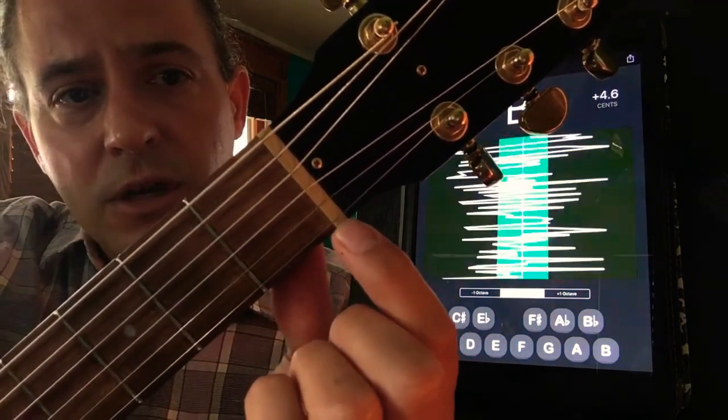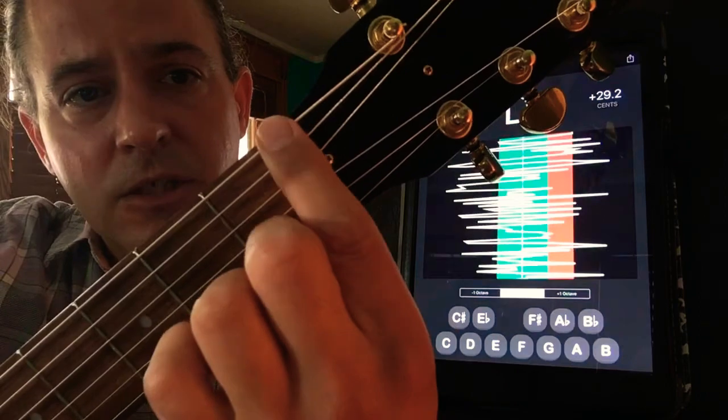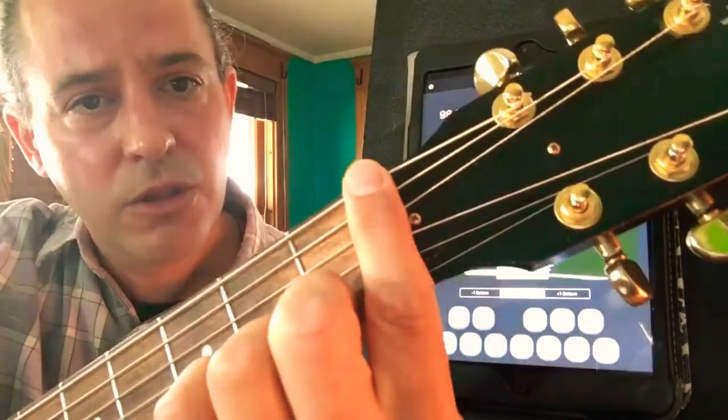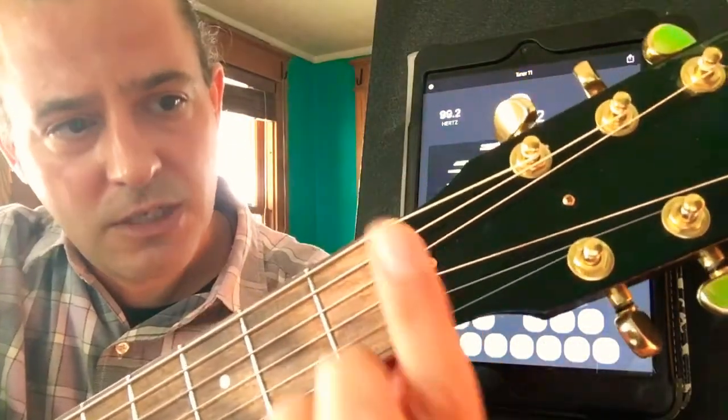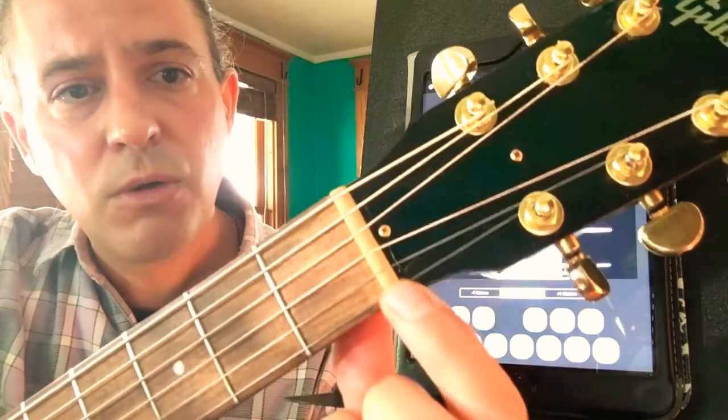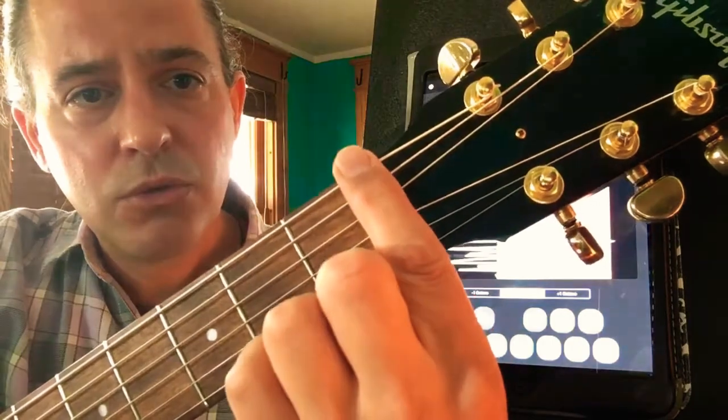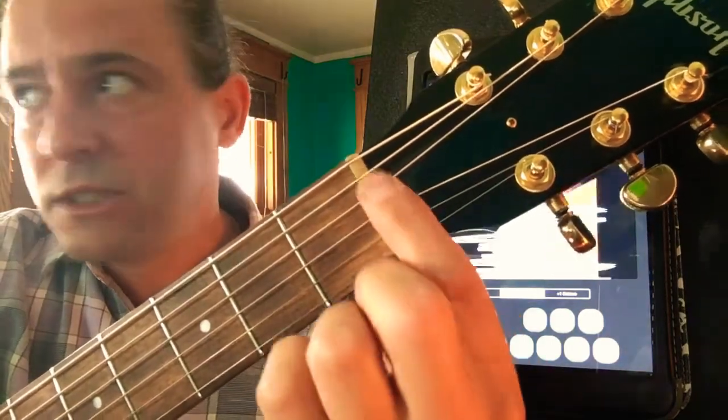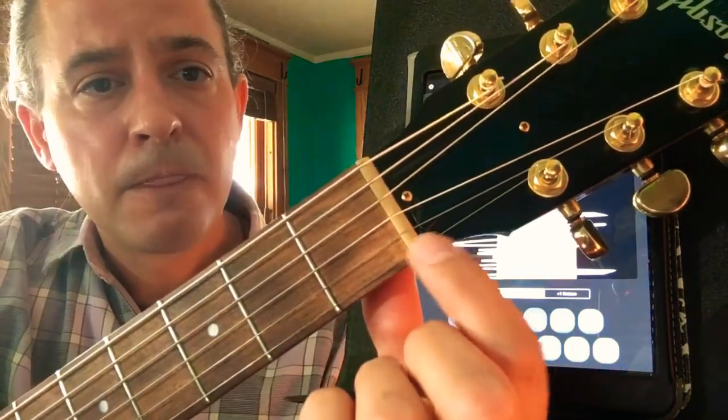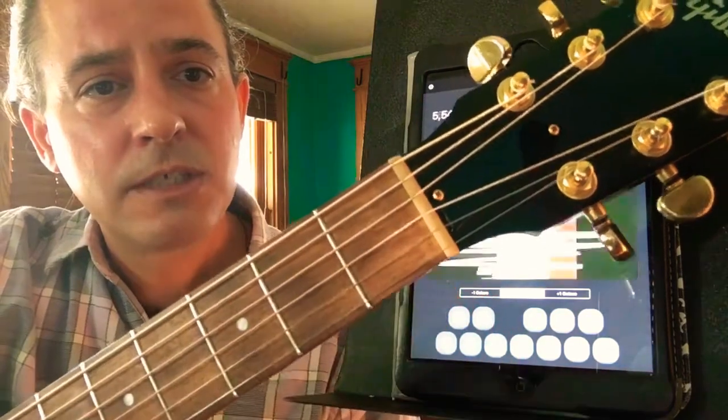Every once in a while you'll run across somebody who calls the big string number one, because that's usually the closest to their eyes when they're looking down at the guitar. That's okay, but we do want to know that the standard numbering system is one through six, from the smallest to the big. One, two, three, four, five, six.